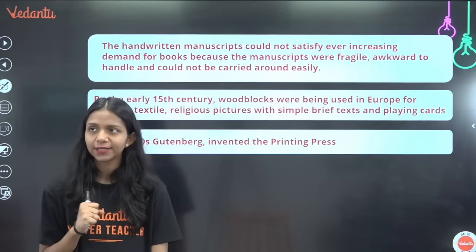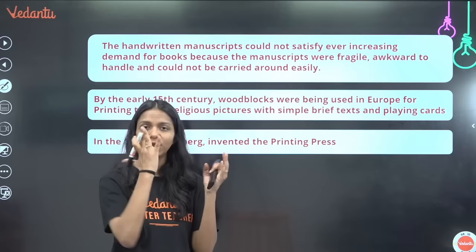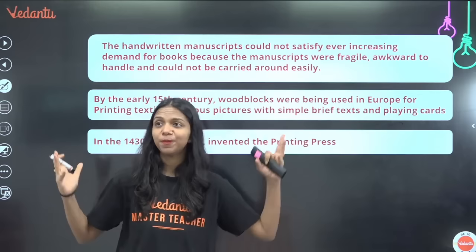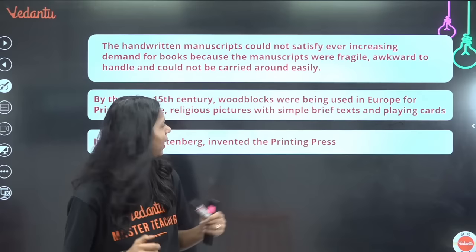The problem was that demand to read had grown greatly, and handwritten manuscripts could not satisfy the growing demand for books. Manuscripts were also quite fragile and not very durable. They were very bulky and large — because the way they were printed, ink would come through to the back, so you could only write on one side, making books very bulky. They could not be carried everywhere.